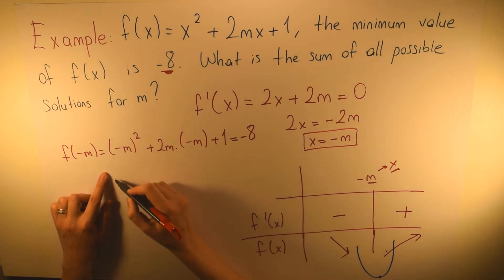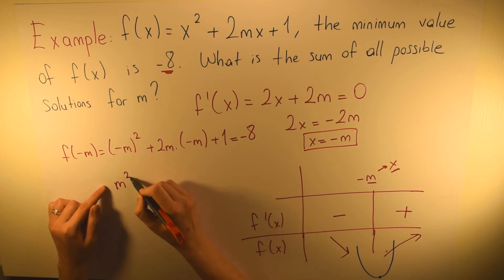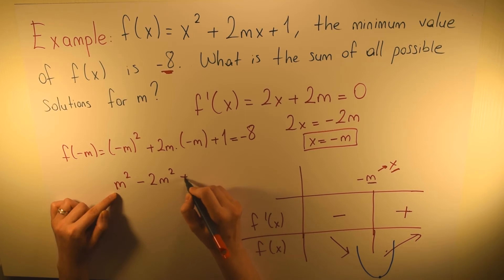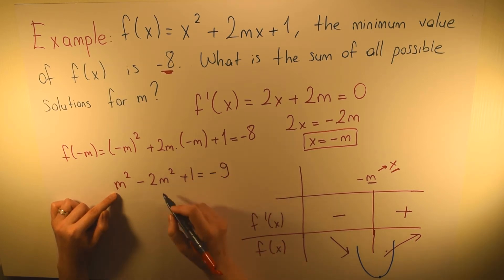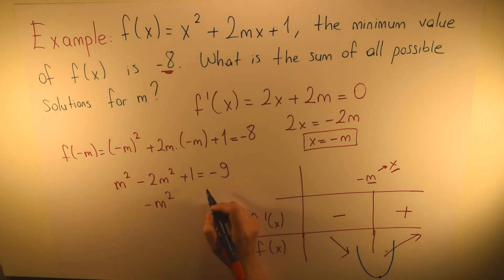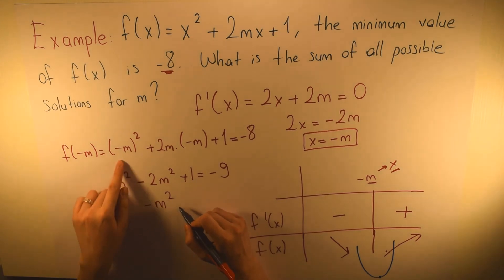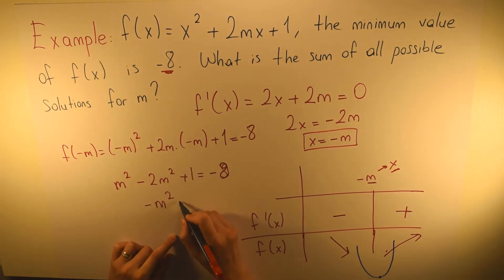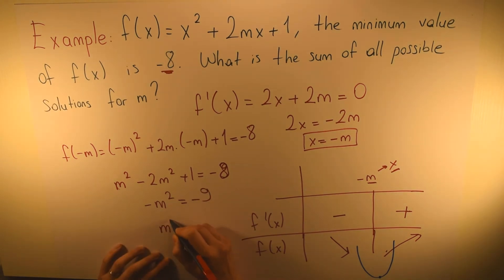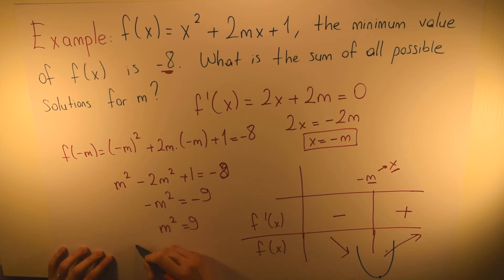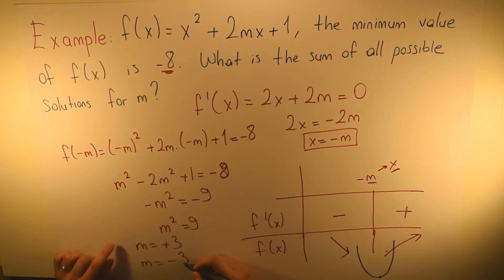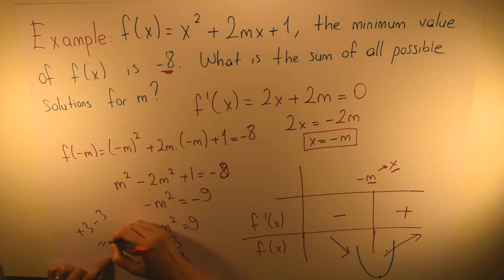We have -m² + 1 = -8, so -m² = -9, which means m² = 9. Therefore m can equal plus 3 or m can equal minus 3. The question asks for the sum of all possible solutions for m, which is 3 + (-3) = 0.